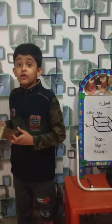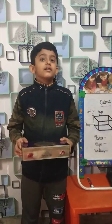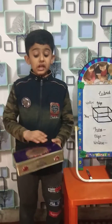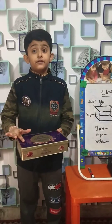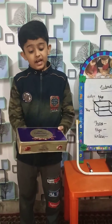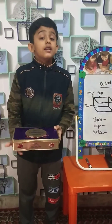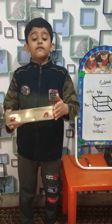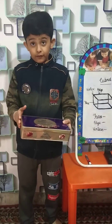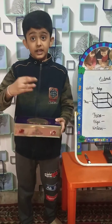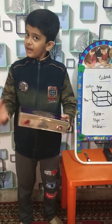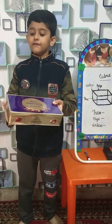This is a cuboid object. Let us count the faces. Top side first face, bottom side second face, left side third face, right side fourth face, front side fifth face and back side sixth face.